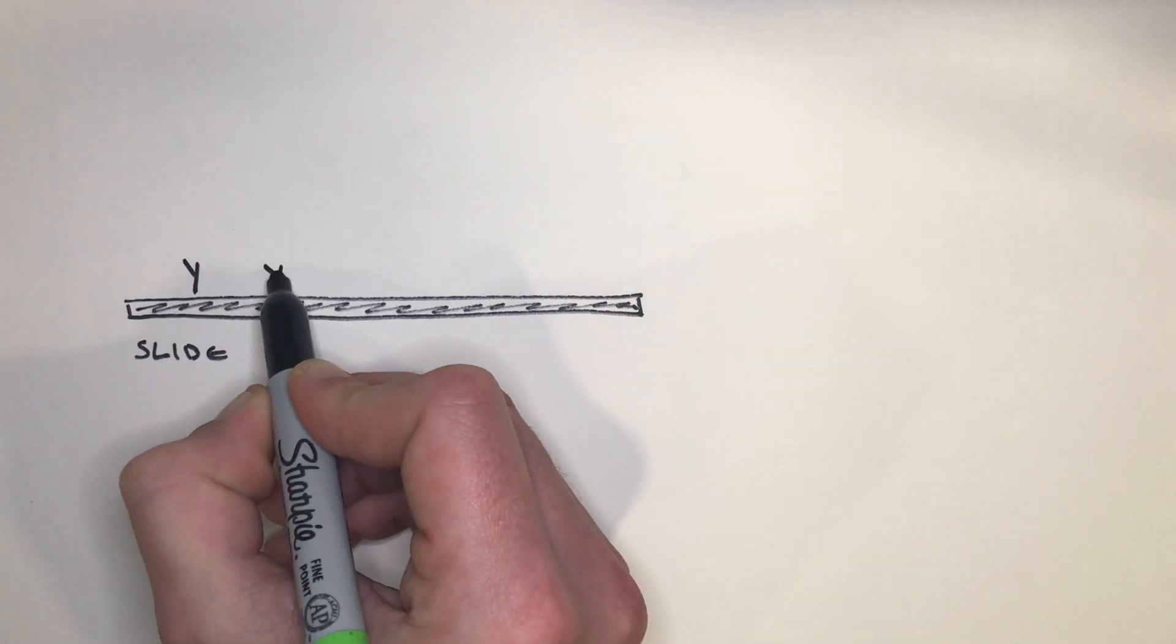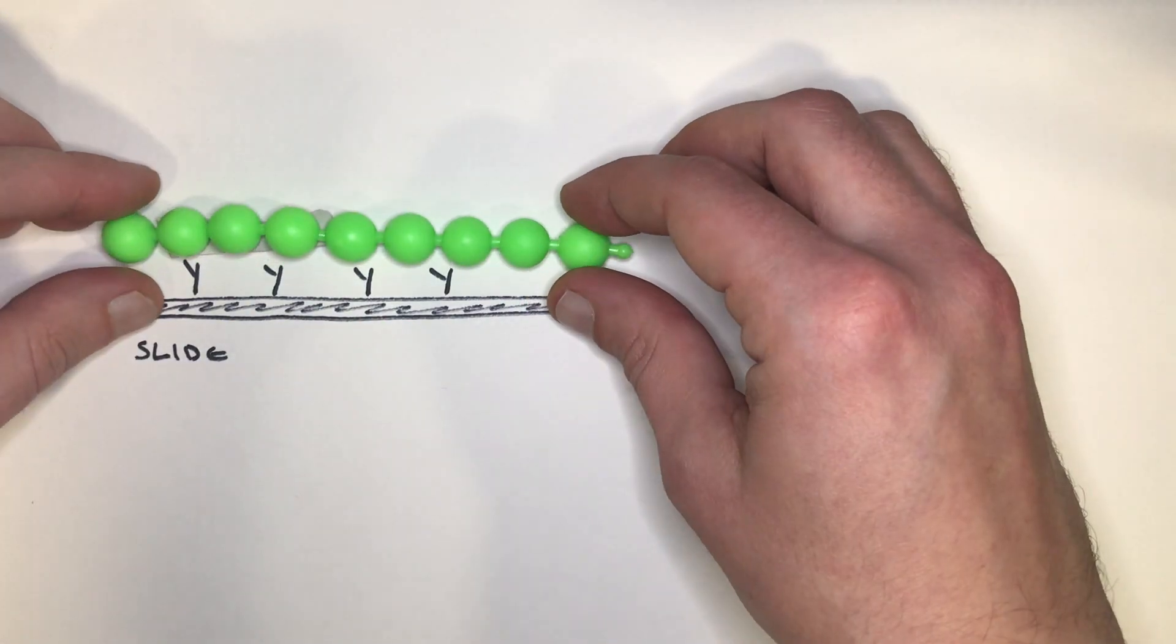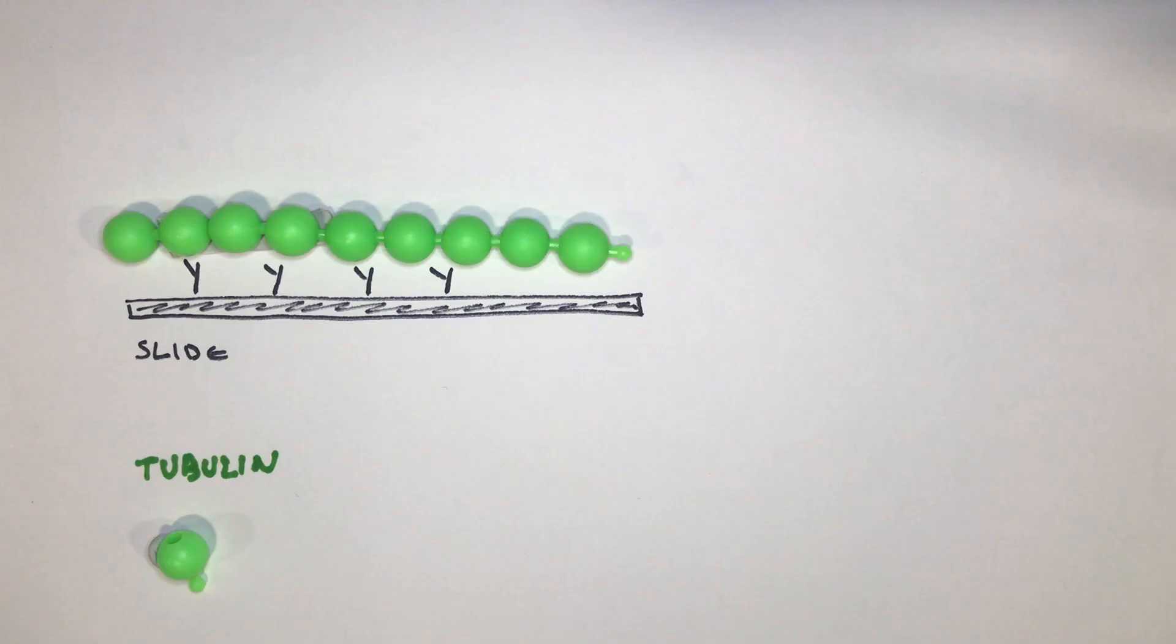To find out we watch microtubules grow and shrink on microscope slides after adding purified septin complexes that consist of septins 2, 6 and 7 which comprise the minimal unit of septin oligomer.